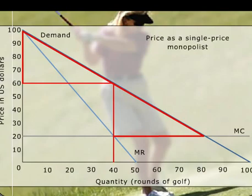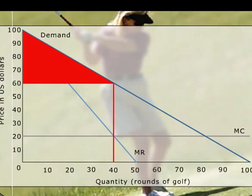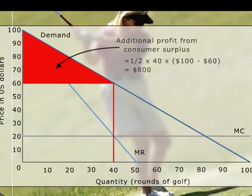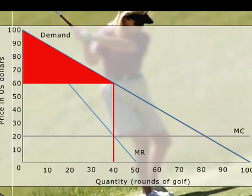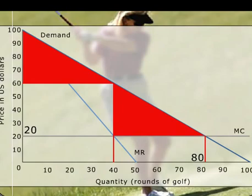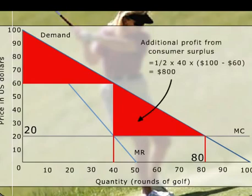First, customers would pay more than $60 for 40 rounds of golf. The triangle above the rectangle of profits is $800 of consumer surplus that the course could obtain. Second, the course is selling fewer rounds of golf than it could. If it set its price as low as possible, at its MC, it would sell 80 rounds. The triangle to the right of the rectangle of profits is another $800 of consumer surplus that the course could obtain from selling these additional rounds.